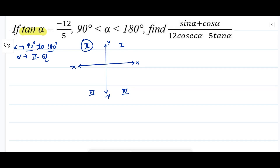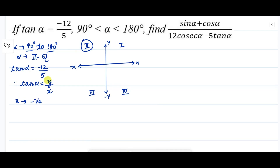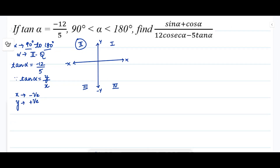We have been given that tan α = -12/5. Using the definition tan θ = y/x, the second quadrant has a negative x-axis, so the x-coordinate will be negative. The y-coordinate will be positive because the second quadrant has a positive y-axis. Therefore tan α = y / (negative x) = 12 / (-5), which correctly represents the given data.